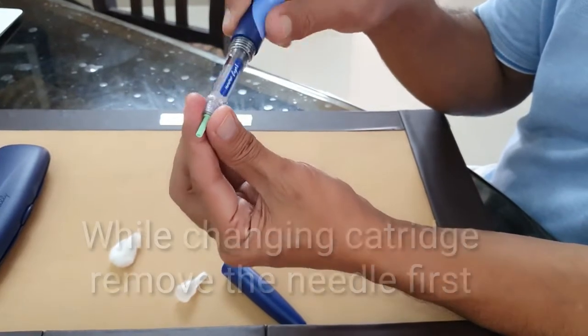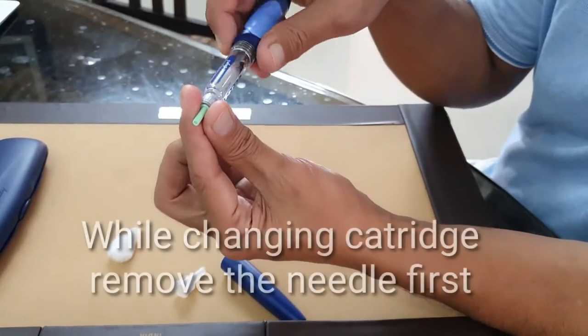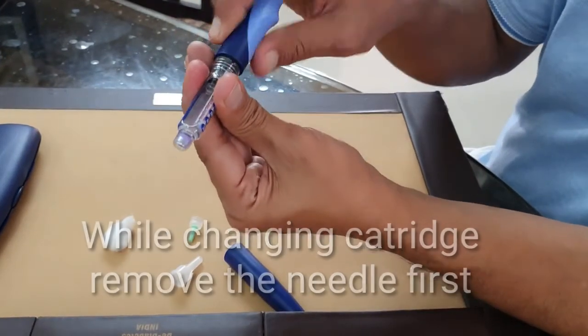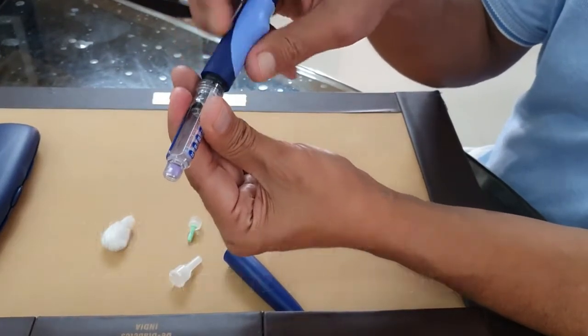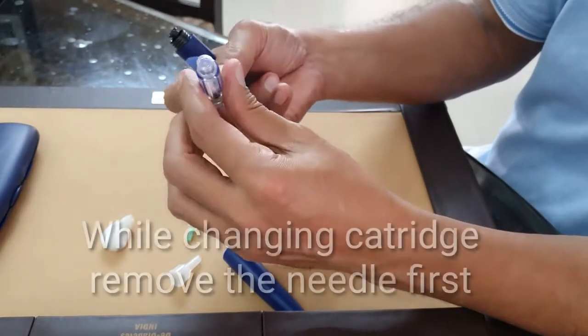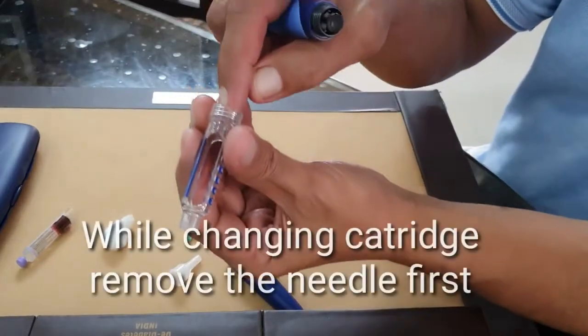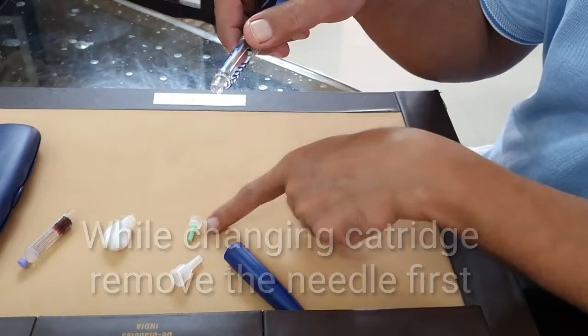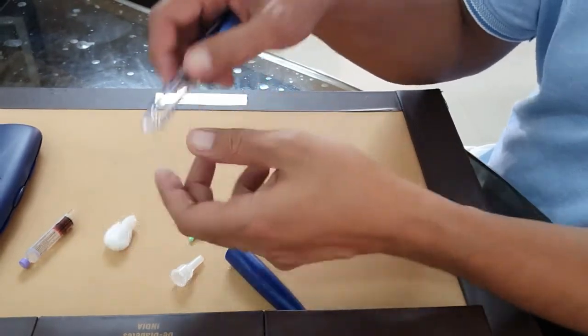Finally it reaches the end and you'll not be able to inject. Once it's over, you're going to remove the needle first, then remove the cartridge. Once you remove the cartridge, put a new one and tighten it, then put the needle. If you don't remove the needle first, you will not be able to remove the cartridge.